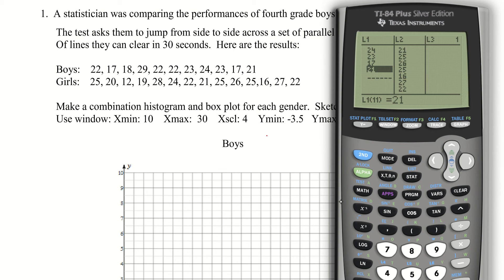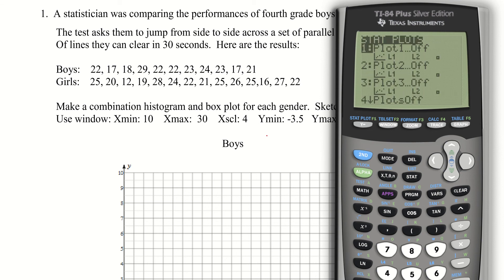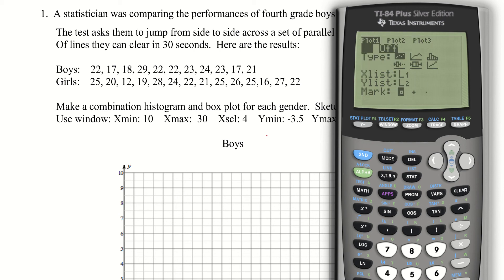I'm going to do this first for the boys. To set up a statistics plot, we hit second and then go to stat plot. Because I want to see both the histogram and box plot simultaneously, I'm going to turn on two different plots. Let's turn on the first one — tap on, go down, and go over to the box plot. I'll pick the first one where I attempt to look at outliers. For a box plot, I just need one set of numbers — list one.